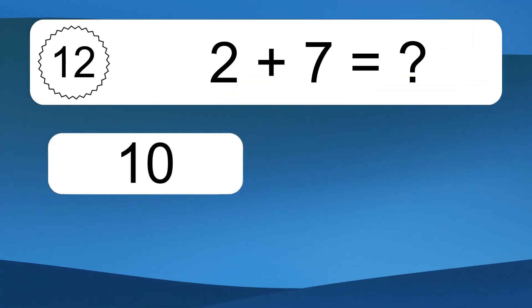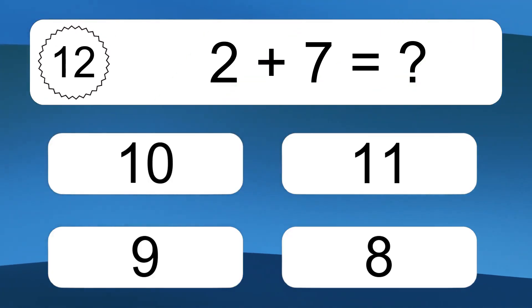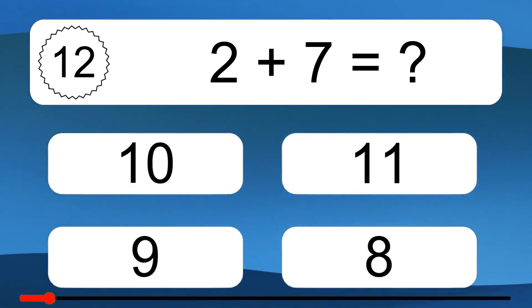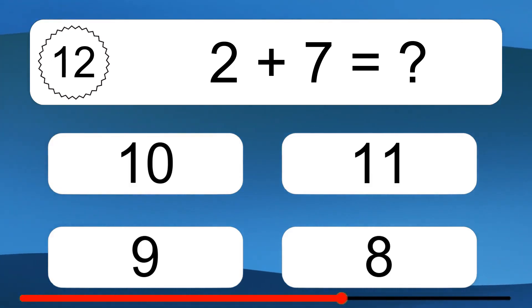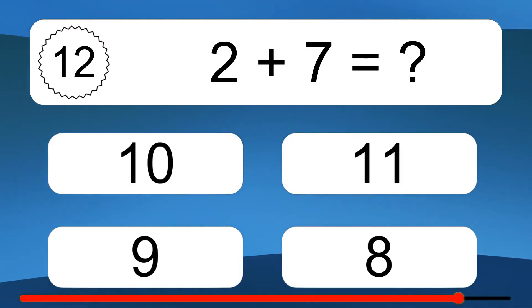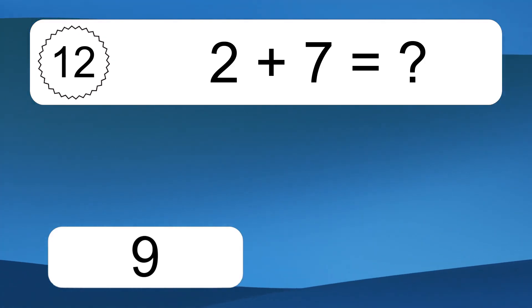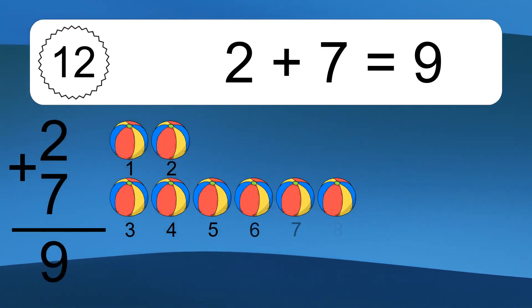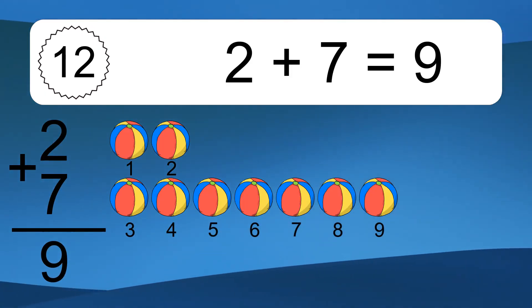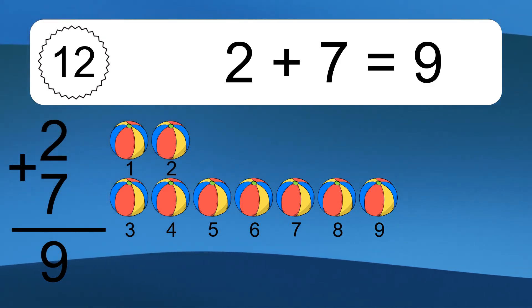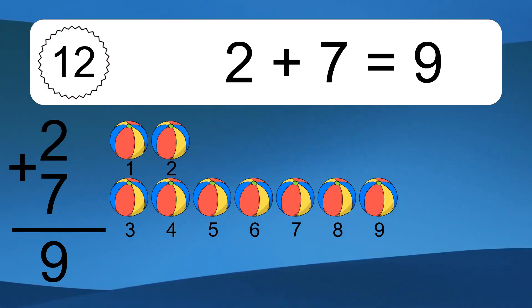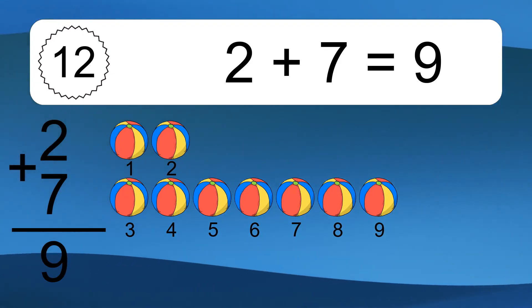2 plus 7 equals what? 2 plus 7 equals 9. Let's count it: 1, 2, 3, 4, 5, 6, 7, 8, 9.